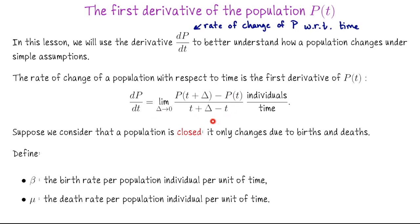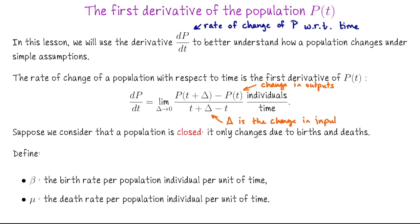We compute that by taking the limit of a difference quotient: p of t plus a little change factor delta, so p of t plus delta minus p of t, divided by t plus delta minus t, which simplifies to just delta. The numerator here is a change in outputs, and the denominator delta is the corresponding change in inputs. We're going to work with this difference quotient to figure out how to express how a population changes with respect to birth and death.